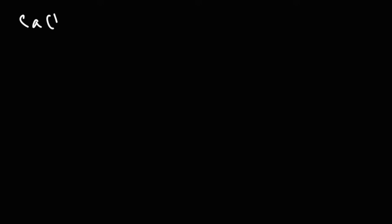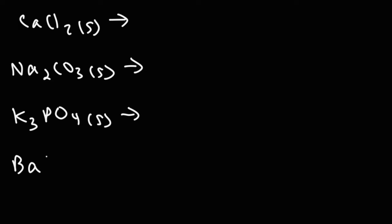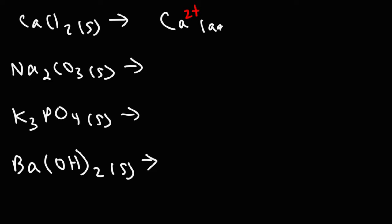Now try these practice problems: calcium chloride, sodium carbonate, potassium phosphate, and barium hydroxide. For calcium chloride, calcium is in group 2 so it has a 2 plus charge. There are two chlorine ions, so the coefficient is 2, and chloride has a negative charge. We label both ions as aqueous, meaning dissolved in water.